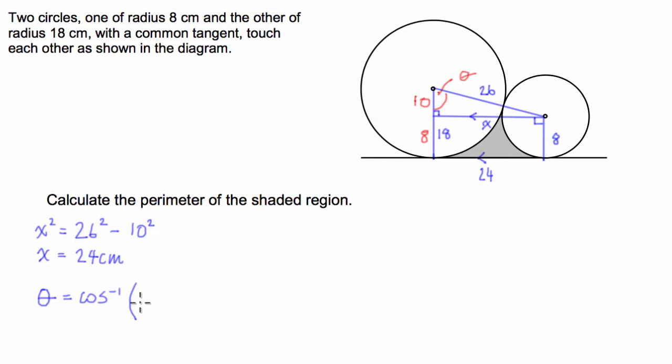So it's quite a simple task just to say that theta is equal to the inverse of cosine, or arc cos, in brackets, adjacent, 10, divided by hypotenuse, 26. And in radians, that is equal to 1.176 radians. Great.